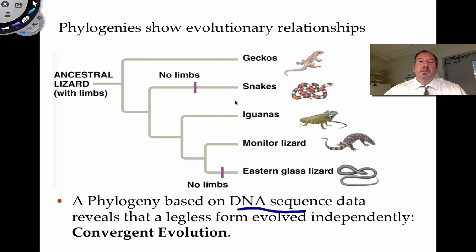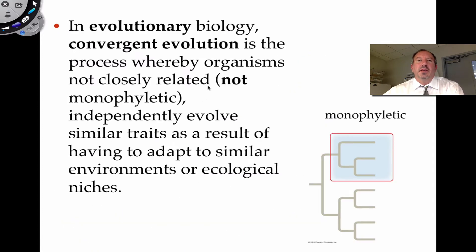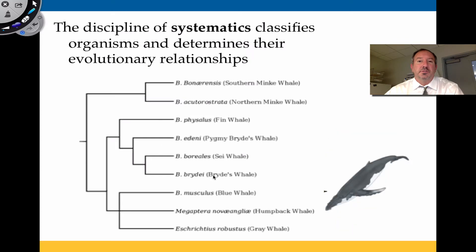The no-limb trait evolved independently in the eastern glass lizard and snakes — we call that convergent evolution. In evolutionary biology, convergent evolution is whereby organisms that are not closely related, not in the same monophyletic group, evolve similar traits because they are adapting to a similar environment or ecological niche. It's not by intention — it's through the process of natural selection.